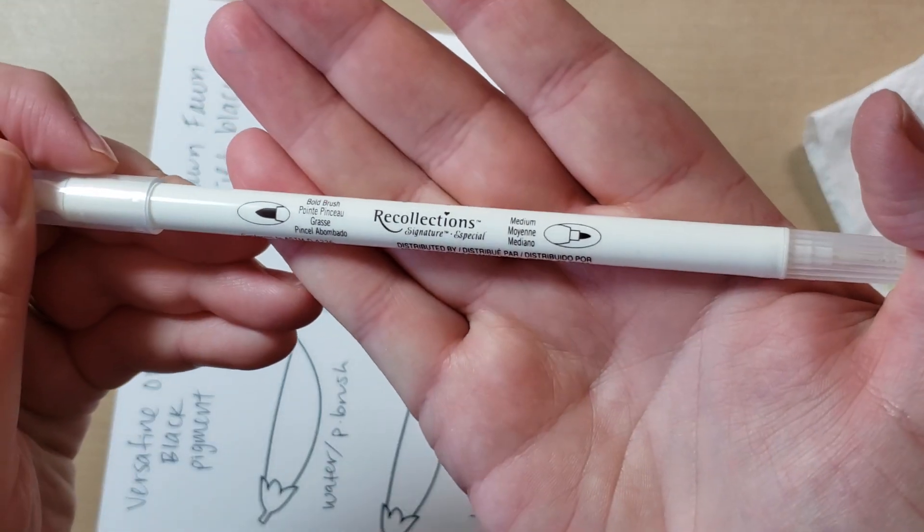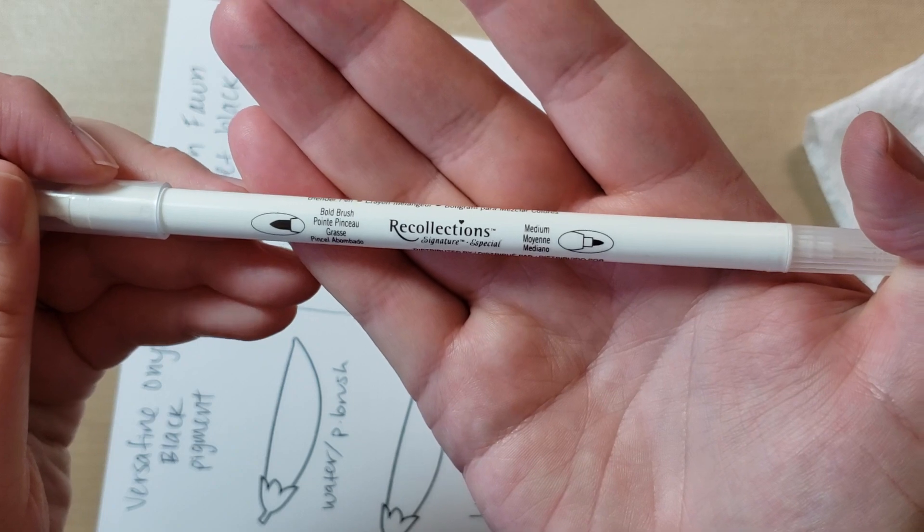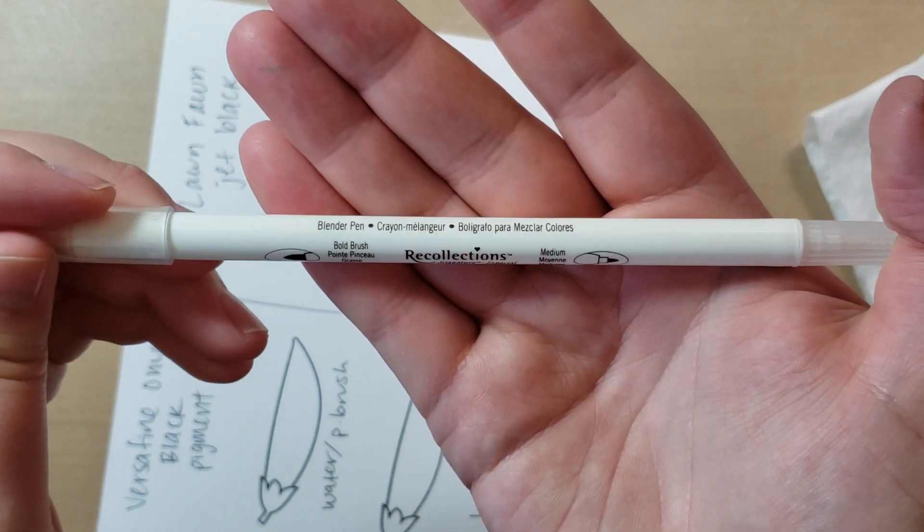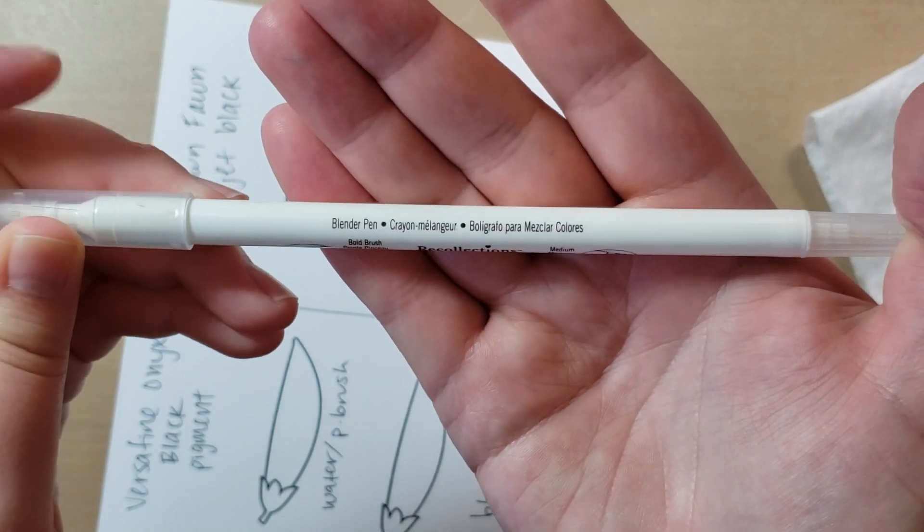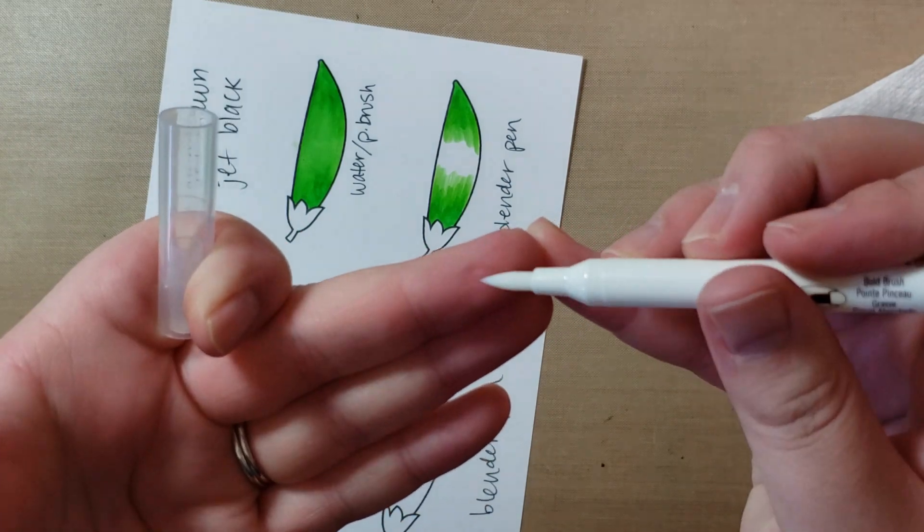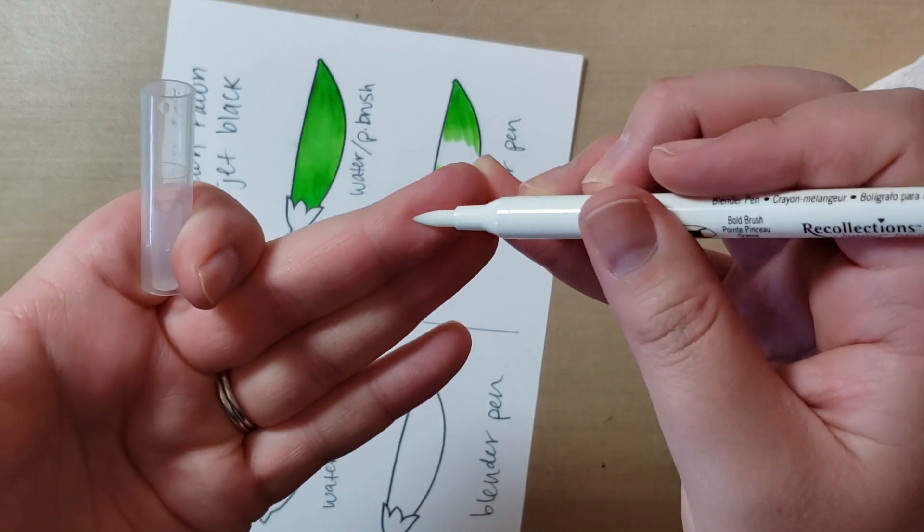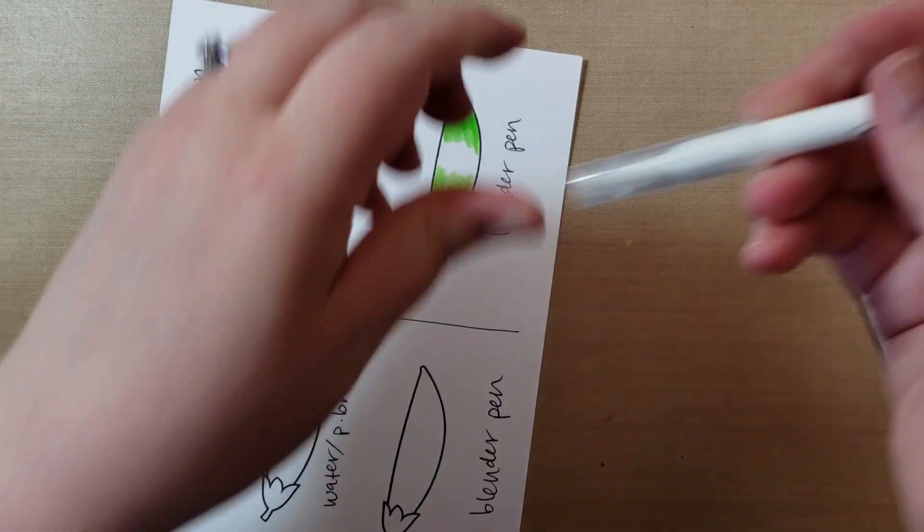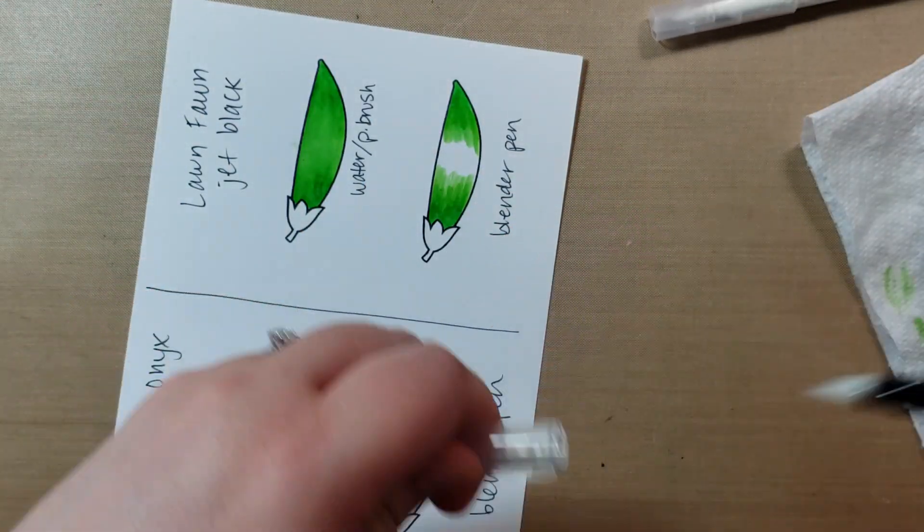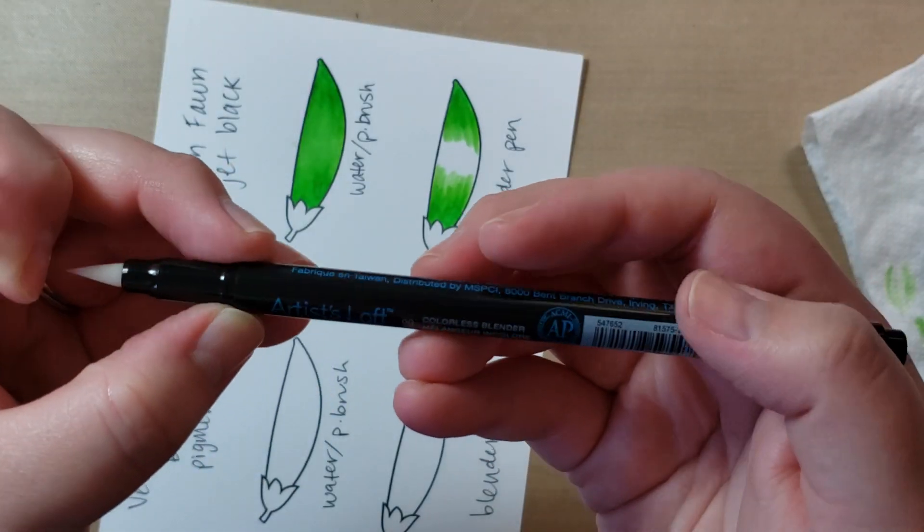You can't see these in the packaging when you're buying them. This is a Recollections one I got at Michael's. Very cheap. I believe it was like $3.50. Blender pen, that's all it says. And this one, again, also stiff. It looks like it may be a brush but it is not. This one is Artist's Loft.